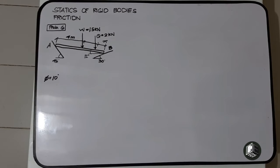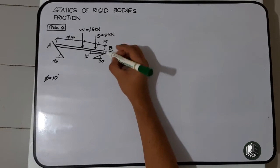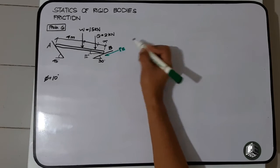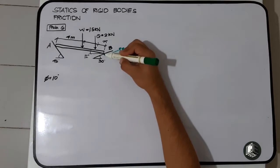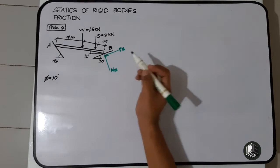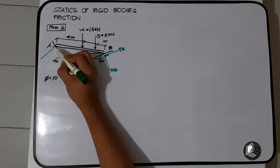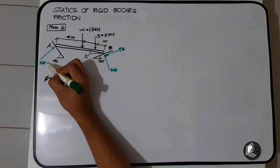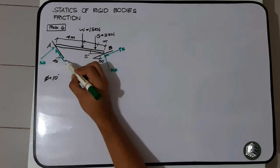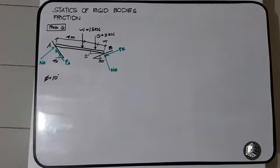So this is the frictional force for point B, and this is the normal force for point B. This is the normal force at support A, and this is the frictional force for point A.